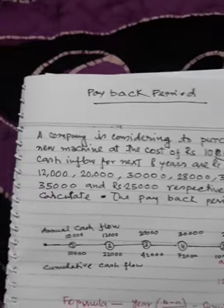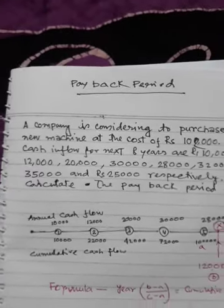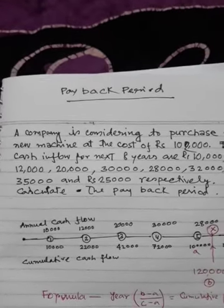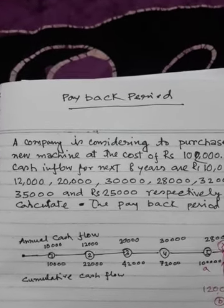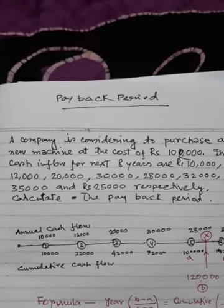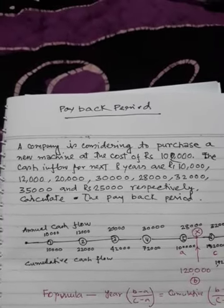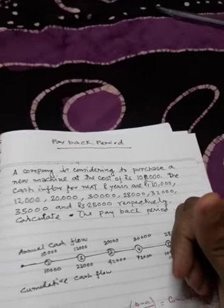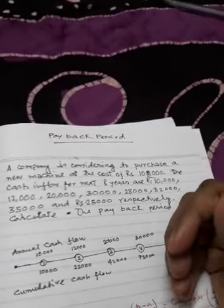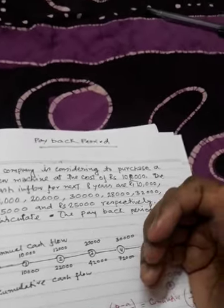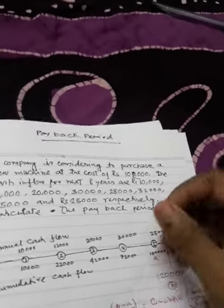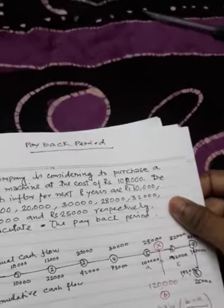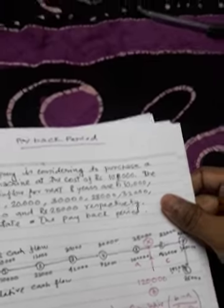Let us start with the payback period method. As we know, as per the payback period method, the decision rule is the time where the investor is capable to collect the initial investment. Every single investor invests 1,000,000.